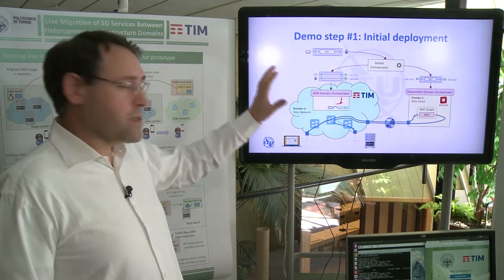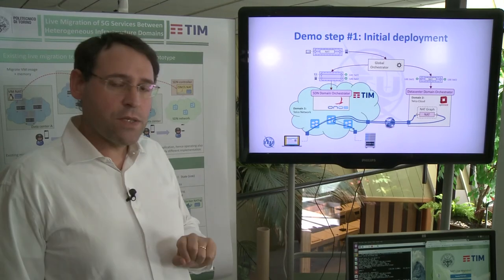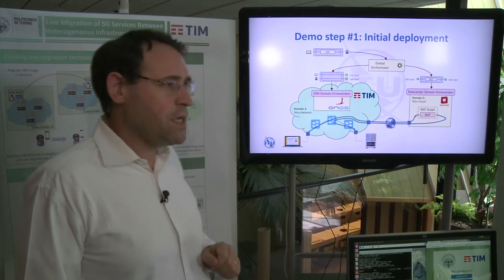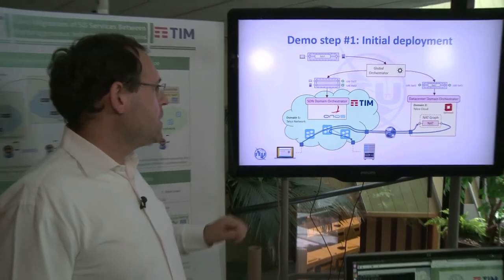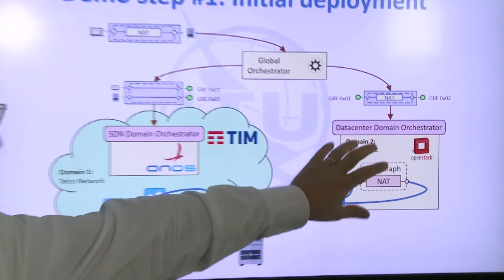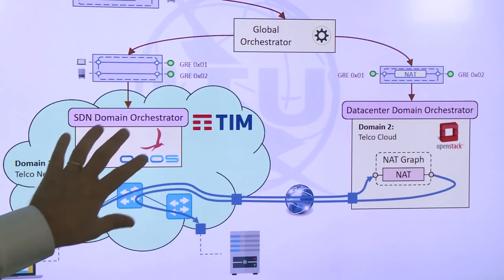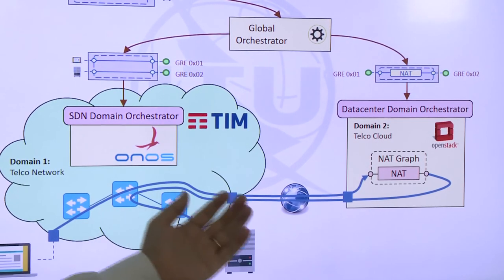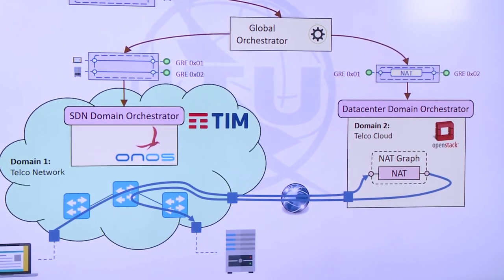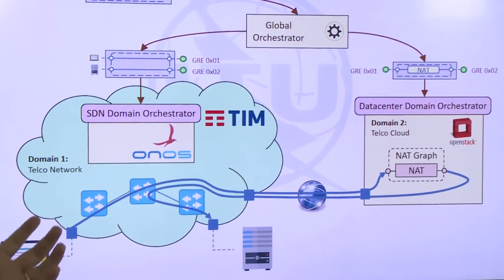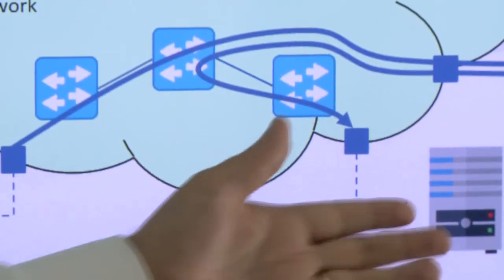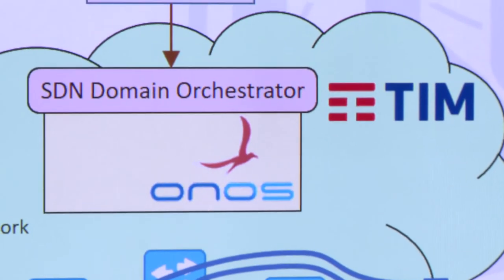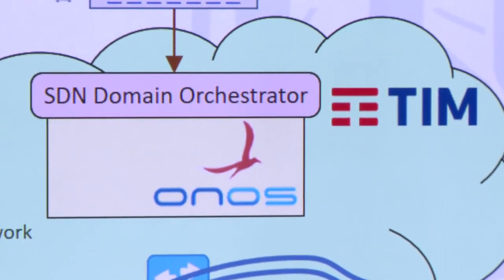This is the setup of our demo. It is very similar to the one presented in December. We have two domains: a data center domain and an SDN domain as the network. We have a client and a server, both connected to the SDN network. The client has private addresses, so to contact the server it needs a NAT service — traffic goes to the NAT and from the NAT to the server.